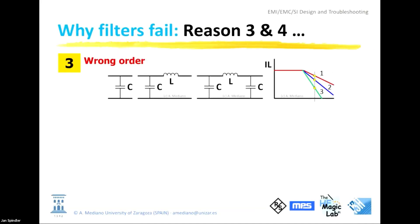Another important thing: perhaps you are not using the right order for your filter. If you introduce one component — a capacitor or a series inductor — you get something like minus 20 dB per decade. Every additional component increases the slope of the attenuation band. If you increase the value of the capacitor, you move the cutoff frequency lower but the slope remains the same at minus 20 dB per decade. Sometimes it is a better strategy to add more components to gain 20 or 40 dB at certain frequencies, rather than increasing component values which introduces more parasitics.